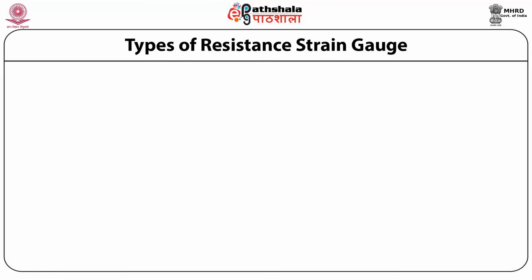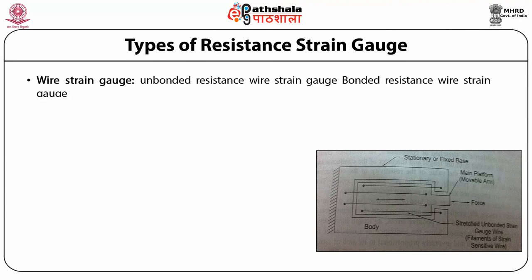Let us now discuss about the types of resistance strain gauge. The first type is the wire strain gauge, which has two subtypes: the unbonded resistance wire strain gauge and the bonded resistance wire strain gauge. The second type is the foil strain gauge, and lastly we have the semiconductor strain gauge.